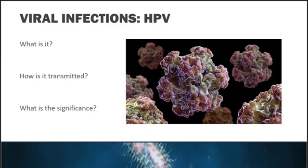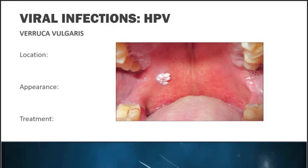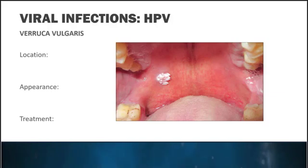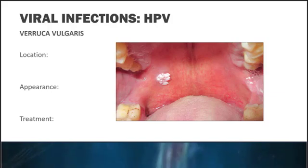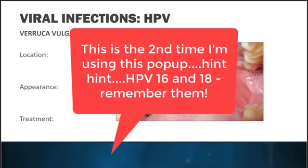There are three benign lesions caused by HPV that we want to cover. Some variants of HPV are low risk types and some are high risk. The text will tell you which low risk types are associated with these benign conditions, but what you really need to remember is that HPV 16 and 18 are the high risk squamous cell-associated types.